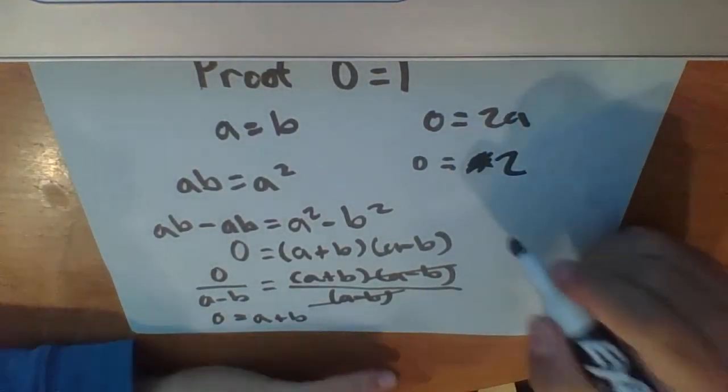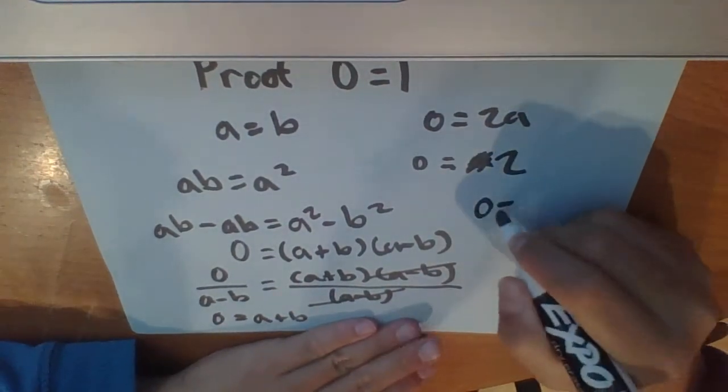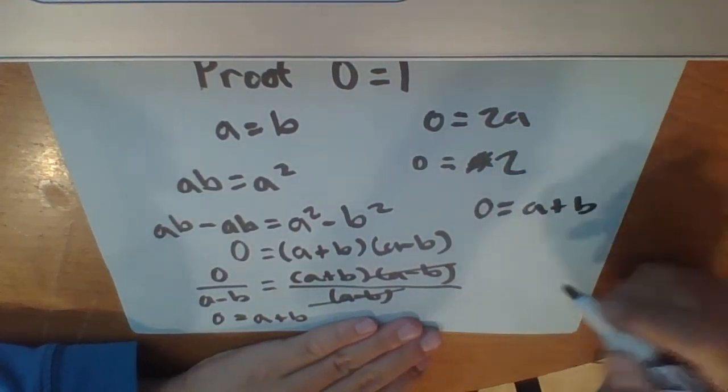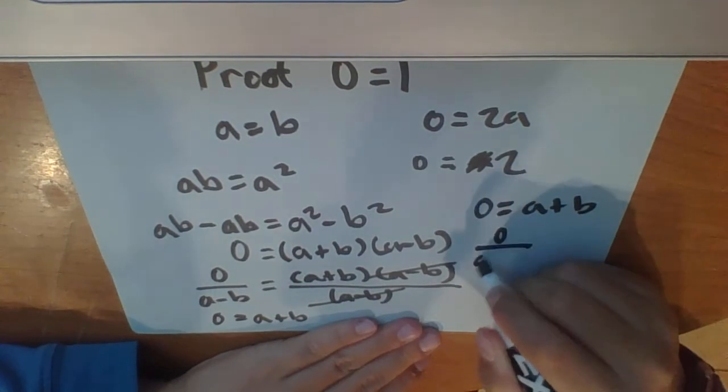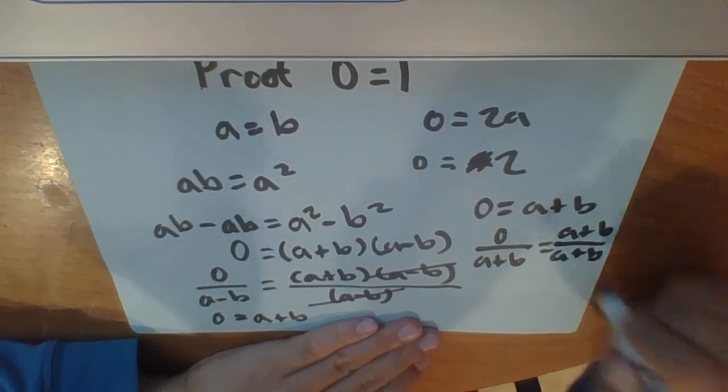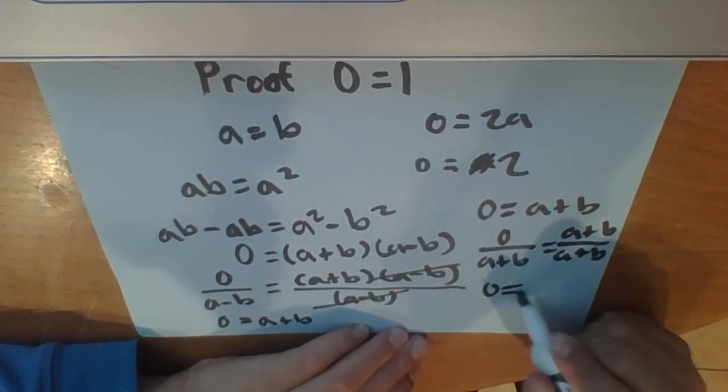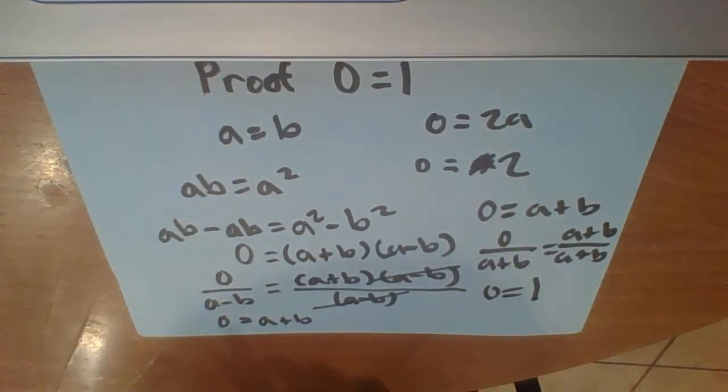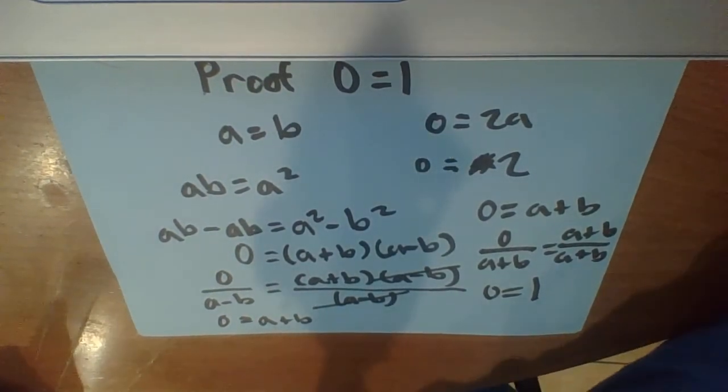But if you go from here and change it to 0 is equal to a plus b, then you divide both sides by a plus b. So then a plus b divided by a plus b should be 1. So then I'm done with 0 equals 1. And there you go. Proof that 0 is equal to 1.